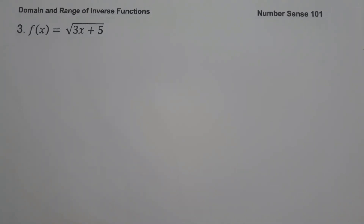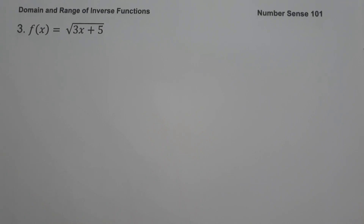On example number 3, f of x equals the square root of 3x plus 5. This time, the given example is a radical function. To find the domain of a radical function, we equate the radicand greater than or equal to zero.